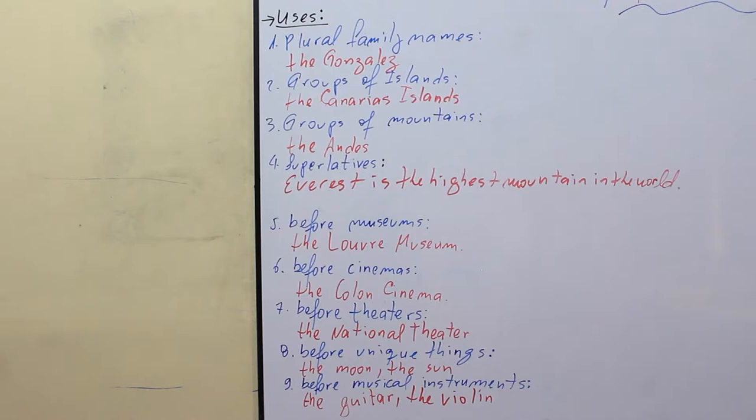The next one, with superlatives. For example, Everest is the highest mountain in the world. Number five, before museums, the Louvre Museum.